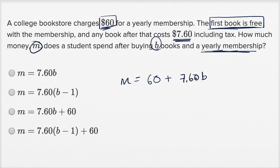So instead of $7.60 being times the number of books, it'd be $7.60 times one less than the number of books you buy. One way to think about it is this B minus one, you could think of this as books you need to pay for. Books that are not free. The first book is free, and every one after that you would pay for.